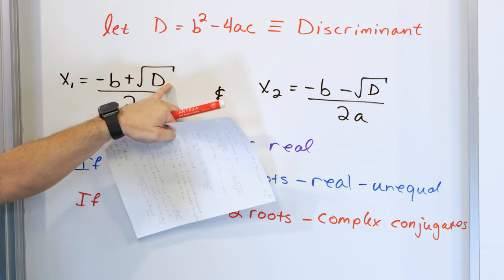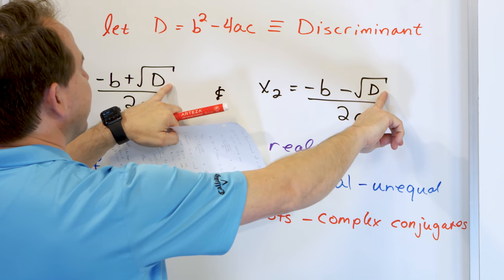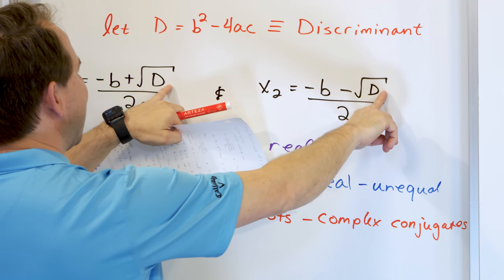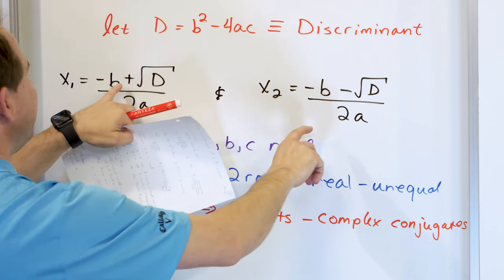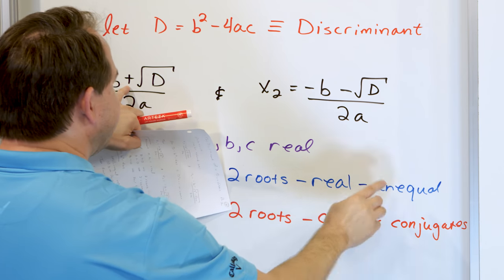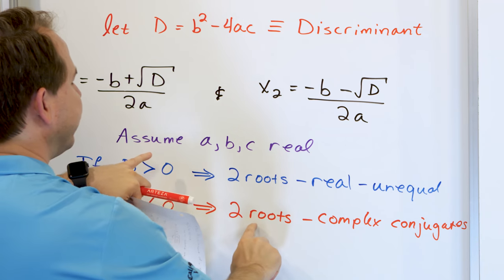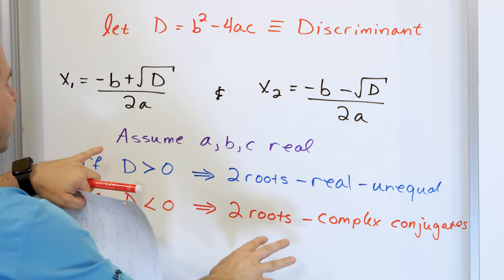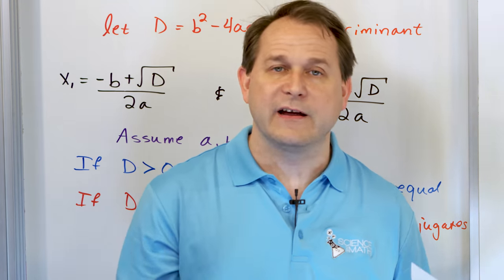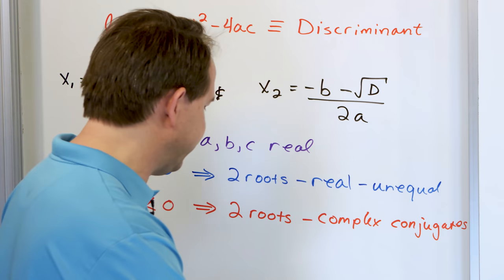Remember, complex conjugates means something like 1 plus 2i and 1 minus 2i, or 1 plus 7i and 1 minus 7i — it's the same thing, you just switch the sign of the imaginary part. So if I have negative 49 as my discriminant, when I take the square root I'll have 7i. Then I'll be adding 7i and subtracting 7i, so they'll be complex conjugates — I'll still have two roots, because in one case I'm adding 7i and in the other I'm subtracting.